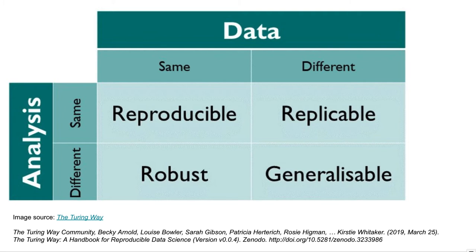If instead you wanted to apply the same analysis to different data, that would get us into the category of replicability. This allows you to determine if you would see the same result on a different dataset. Imagine you had a human microbiome sample from subjects in the United States — you might try to replicate that analysis on individuals in another country to see if the findings are replicated in a different population.